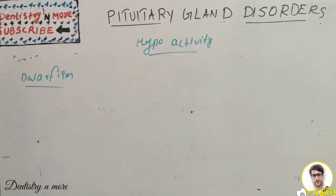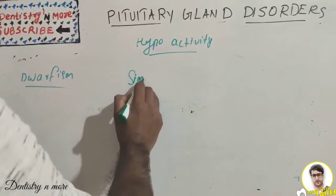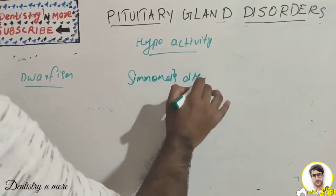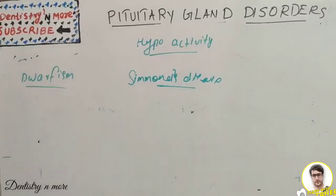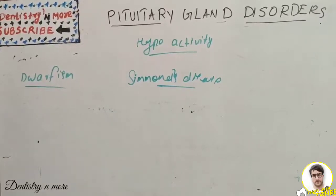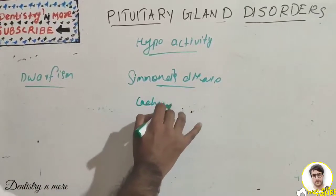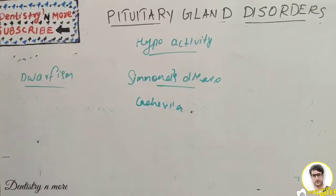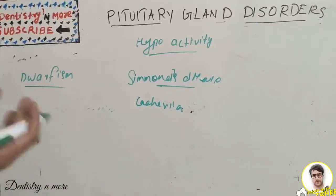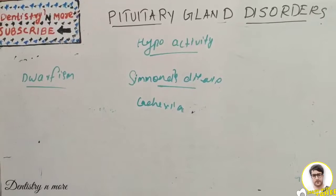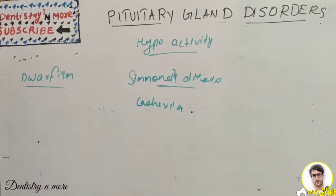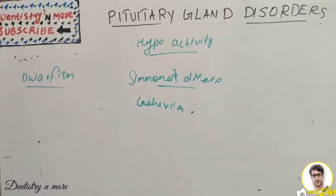Dwarfism is basically a genetic disorder, also associated with insensitivity to growth hormone. Next is Simmons disease, a very rare pituitary disease also called cachexia. It involves senile decay due to deficiency of hormones from the target glands of the anterior pituitary — that is the thyroid, adrenal cortex, and gonads — resulting in loss of hair, loss of teeth, and dry, wrinkled facial skin.